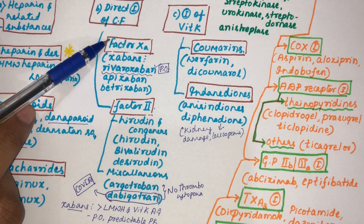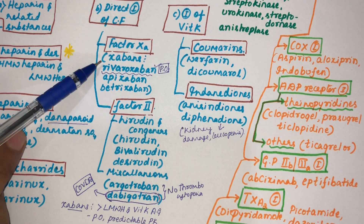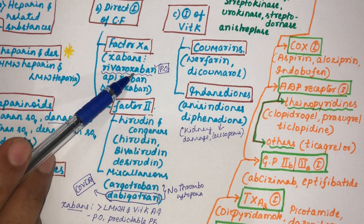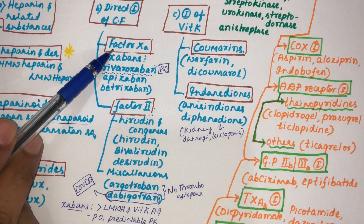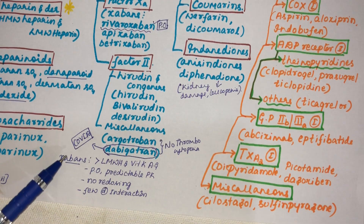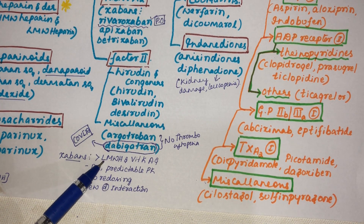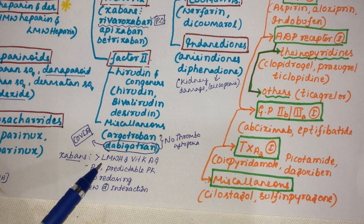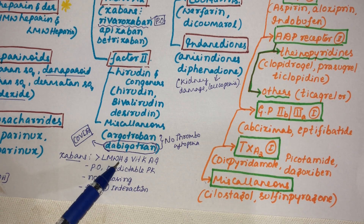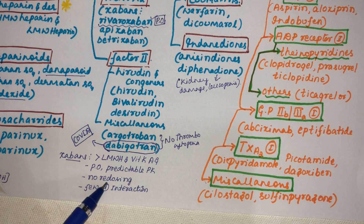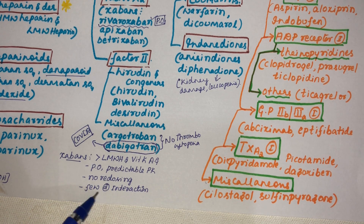The direct inhibitors of factor 10a are the Xabans — any drug ending in '-xaban' inhibits factor 10a. Examples are rivaroxaban, apixaban, and betrixaban. They are given through the oral route. Their efficacy is greater than low molecular weight heparin and vitamin K anti-coagulants. They have predictable pharmacokinetics, no redosing required, a longer half-life, and fewer drug interactions.